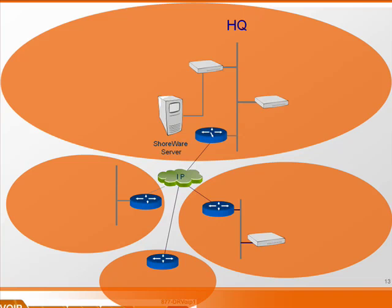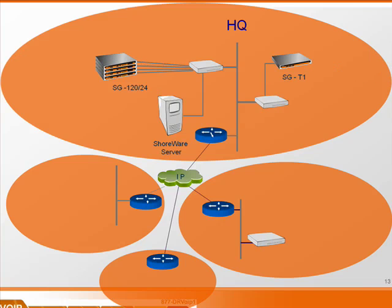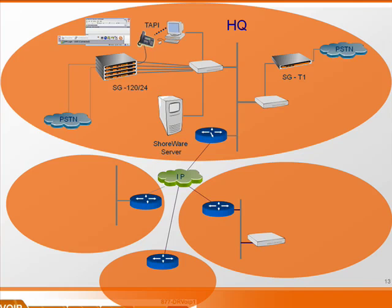At that point, you're going to begin to drop in some number of ShoreTel switches to provide connectivity with the phone company as well as connectivity for your ShoreTel users. In this example, we have four ShoreTel SG-120s, some analog telephone lines to the public switched telephone network, and at least one analog telephone. I also notice we have an SG-T1 — very typical in a ShoreTel environment to have a digital link to the PSTN to enable services like primary rate interfaces. So this is a very typical ShoreTel installation.